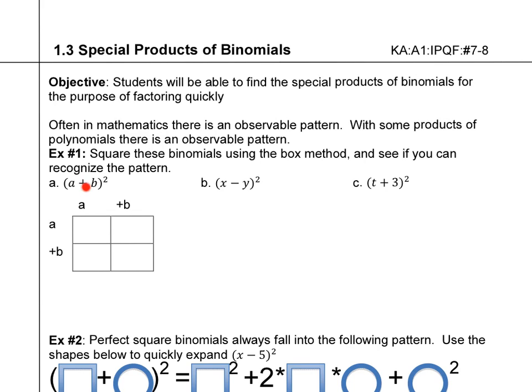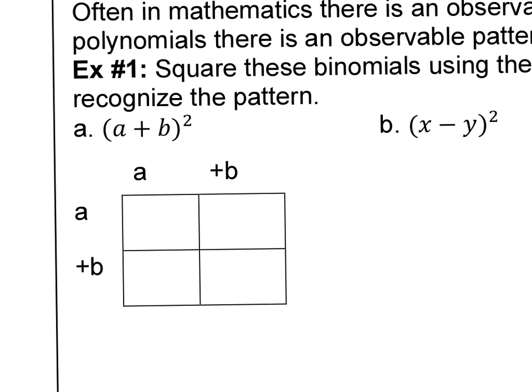Let's go ahead and square these binomials and see if we can figure out what the pattern is. These are all perfect squares — this is a plus b squared, x minus y squared, 2 plus 3 squared. Using the box method, I put a plus b on top and a plus b on the side. We'd get a squared, then a times b which is ab, and then again ab, and then b squared.